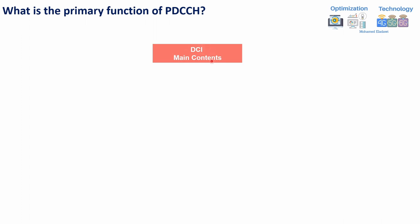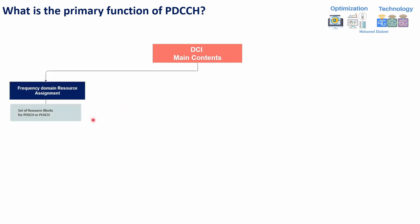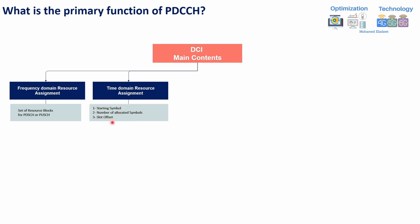DCI can carry several content types. For example, the first is frequency domain resource assignment — the DCI delivers information to the UE telling it how many resource blocks are going to be used by PDSCH or PUSCH. Then there is time domain resource assignment, which informs the UE about which slot, how many symbols will be used, the starting symbol, number of allocated symbols, and so on.